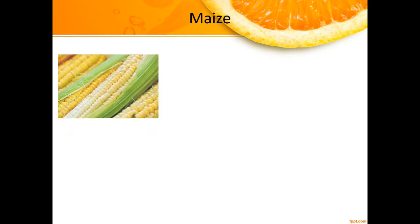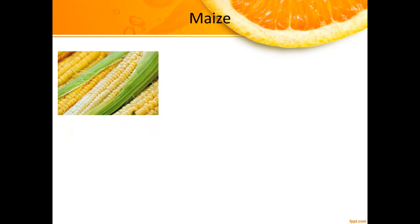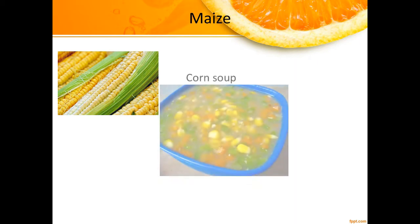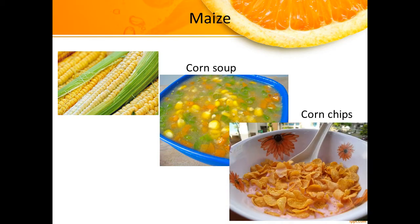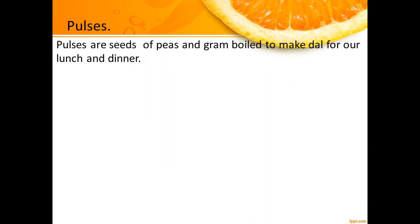We eat the seeds of maize in many forms. We can roast the maize seeds and eat them. We can make corn soup out of the ground paste of corn, and we can make corn chips and mix it with milk to eat.